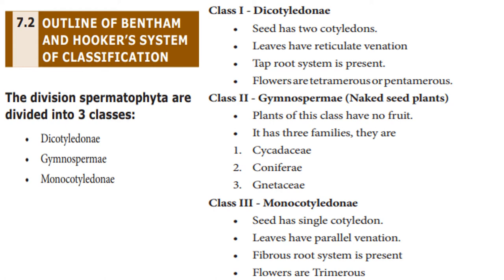Class 2: Gymnosperm — naked seed plants. Plants of this class have no fruit. It has three families: Cycadaceae, Coniferae, and Gnetaceae.